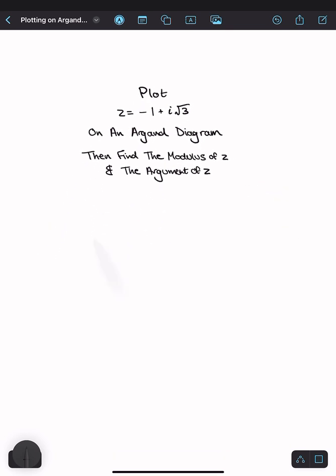So first let's draw our Argand diagram by drawing our real and our imaginary axis, labeling them.